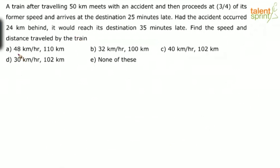The options given are: A) 48 kilometers per hour, distance 110 kilometers; B) 32 kilometers per hour, distance 100 kilometers; C) 40 kilometers per hour, distance 102 kilometers; D) 30 kilometers per hour, distance 102 kilometers. And the fifth option is none of these.